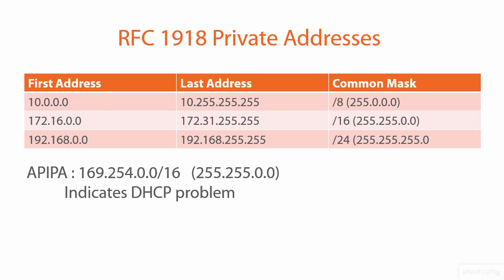Link-local addresses, or as Microsoft calls them, APIPA — automatic private IP addresses — is yet another reserved range used such that if a computer cannot get an IP address from, say, a dynamic host configuration protocol DHCP server, the network interface will auto-assign an address in the range of 169.254 with a 16-bit subnet mask.